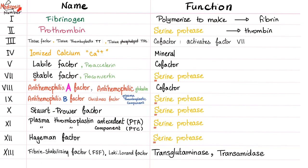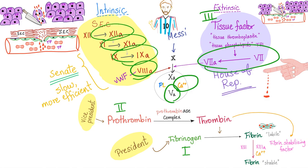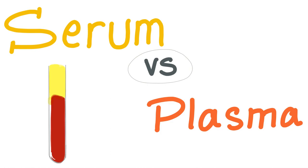Here is the number, name, and function of each coagulation factor — we covered this in the last video. Remember: factor 5 is the labile factor or proaccelerein, a cofactor and the most heat-unstable factor. Fibrinogen is factor 1, prothrombin is factor 2, tissue factor is factor 3, calcium is factor 4. Factor 6 doesn't exist. Factor 7 is in the extrinsic pathway. Factors 8, 9, 11, and 12 are in the intrinsic. Factor 13 stabilizes fibrin. These 12 coagulation factors are divided into three groups: fibrinogen, prothrombin, and contact.